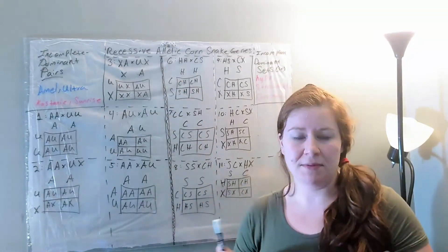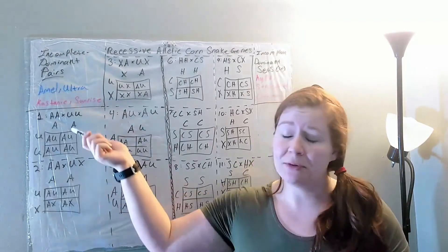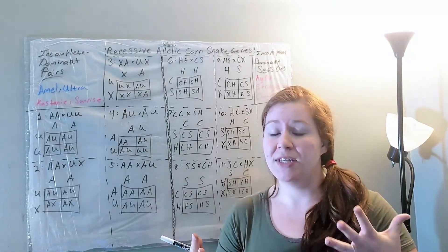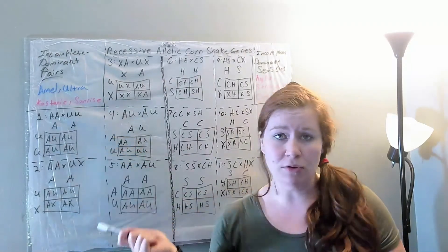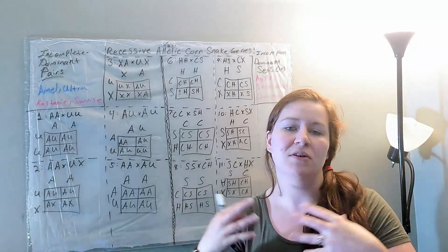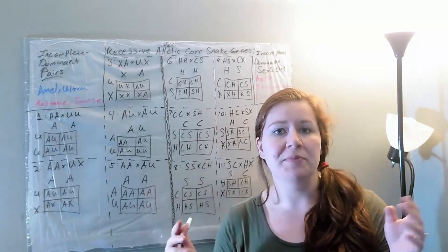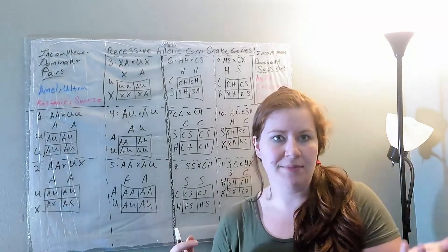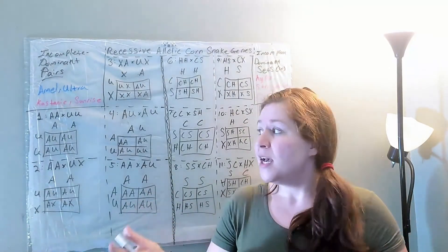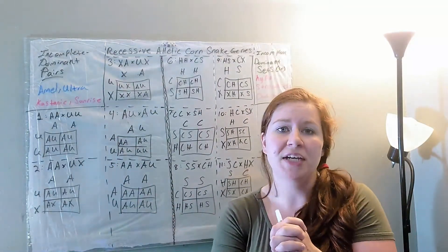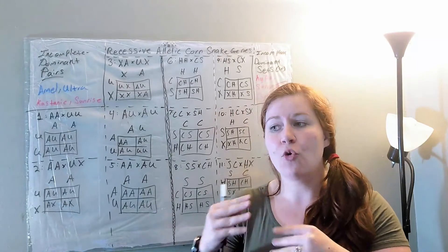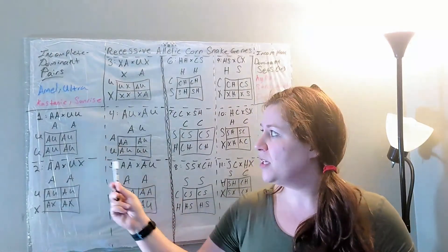Allelic genes can be something like Motley and Stripe. However, Motley and Stripe are not incomplete dominant, because incomplete dominant means that when two genes show up at the same time, you get a visual representation that's a combination of both. So when you breed Amel to Ultra, the Ultramel is what comes out — that is a combination visual of the two. The phenotype is a combination of the other two phenotypes.